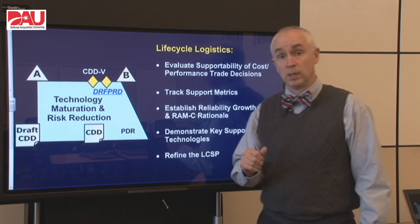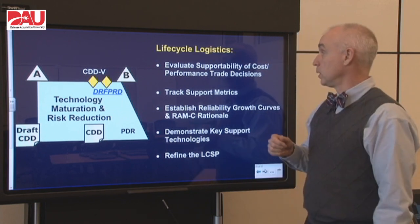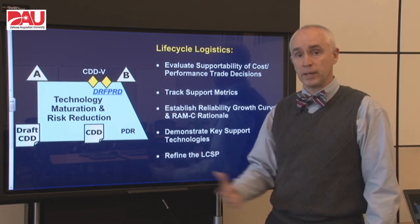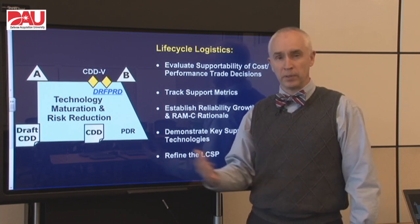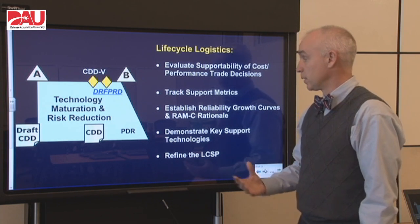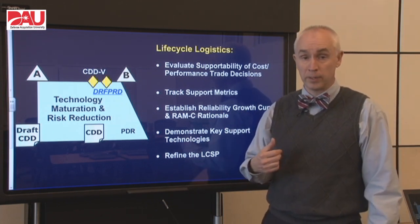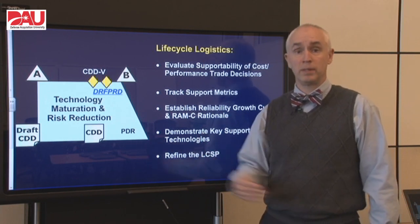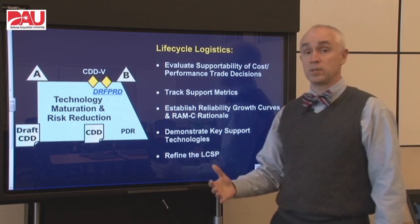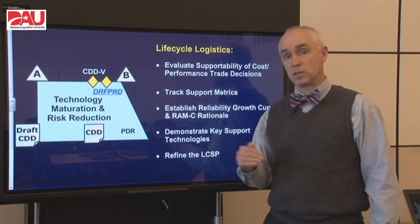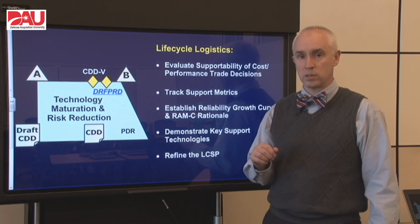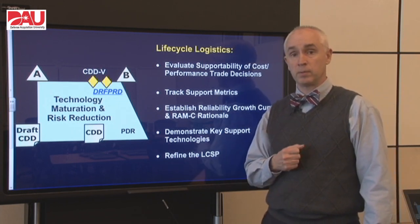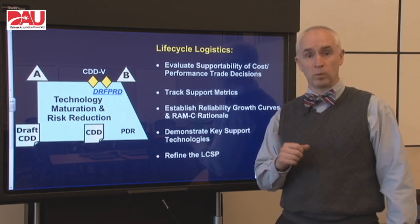Last but not least, our life cycle logisticians have to be engaged in this phase as well. They need to evaluate the supportability of each prototype and track support metrics. We can start getting feedback through testing on how we're doing on reliability of different components and subsystems — it's never too early to start gathering that data. We also want to establish reliability growth curves and the reliability and maintainability cost rationale, which will follow us through the rest of the program to make sure we meet the overall user requirements. We want to demonstrate any key support technologies, just like manufacturing technologies, and we want to refine that life cycle sustainment plan so we have a better plan going forward when we hit Milestone B.